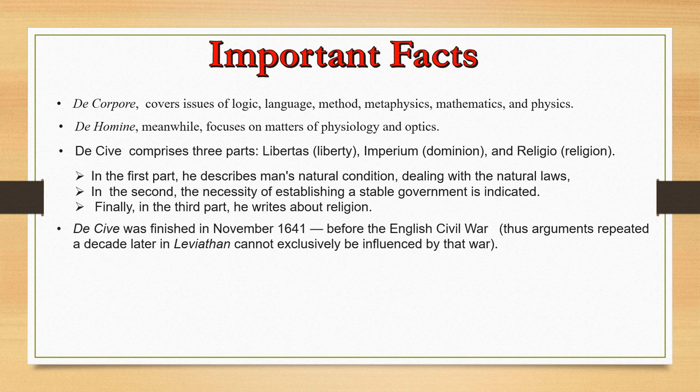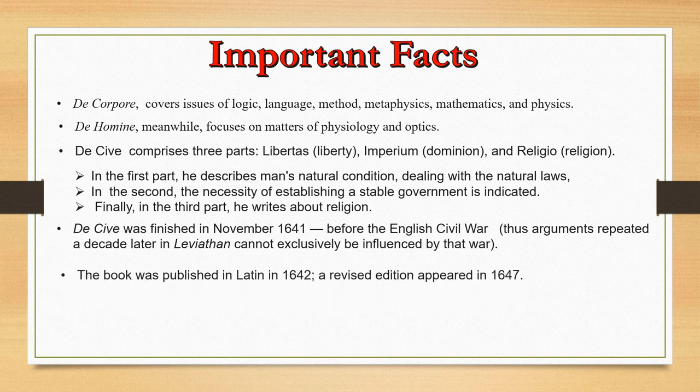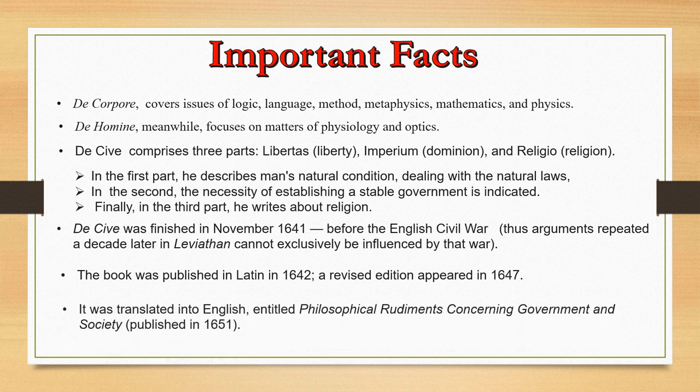De Cive was finished in November 1641 before the English Civil War. Thus arguments repeated a decade later in Leviathan cannot exclusively be influenced by that war. The book was published in Latin in 1642; a revised edition appeared in 1647. It was translated into English, entitled Philosophical Rudiments Concerning Government and Society, published in 1651.